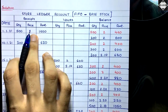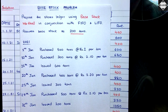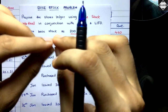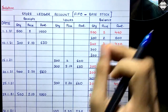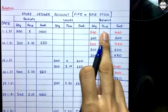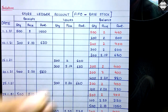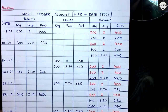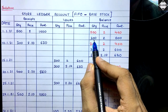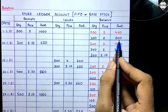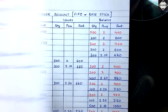We know we need to keep a base stock of 200 tons, so we take 200 tons separately as a distinct lot — marked in red ink — 200 × ₹2 = ₹400. That's a separate constant lot we will not touch. The remaining 300 tons is the free quantity: 300 × ₹2 = ₹600. So that 500 is converted into two lots: the base stock (untouchable) and the free one.